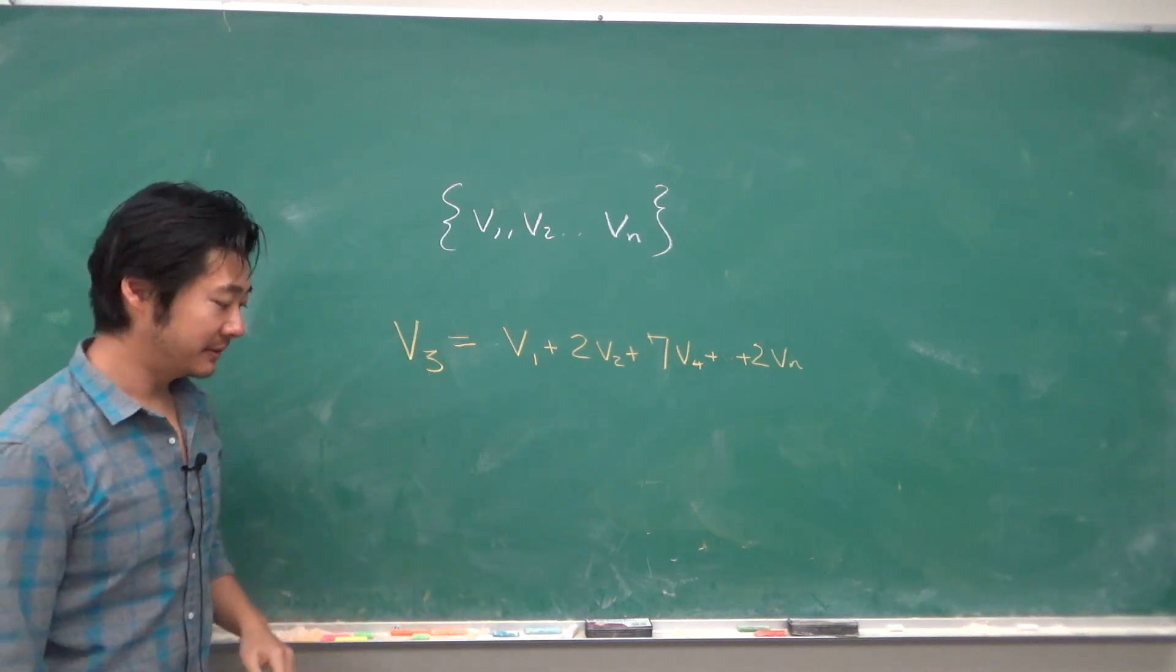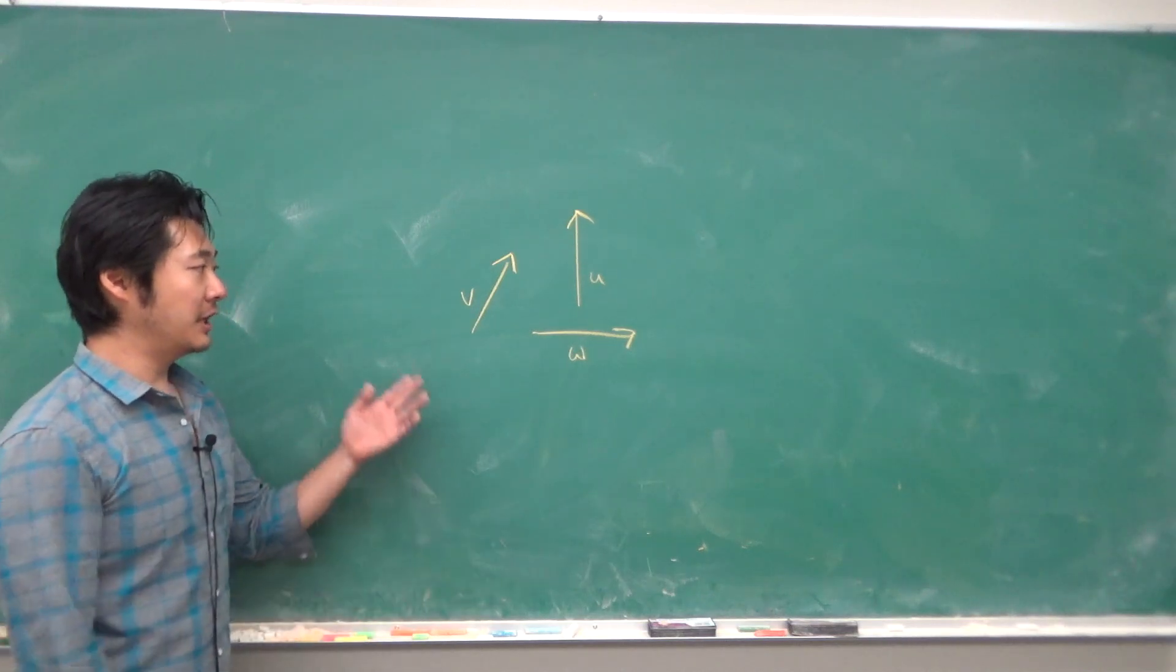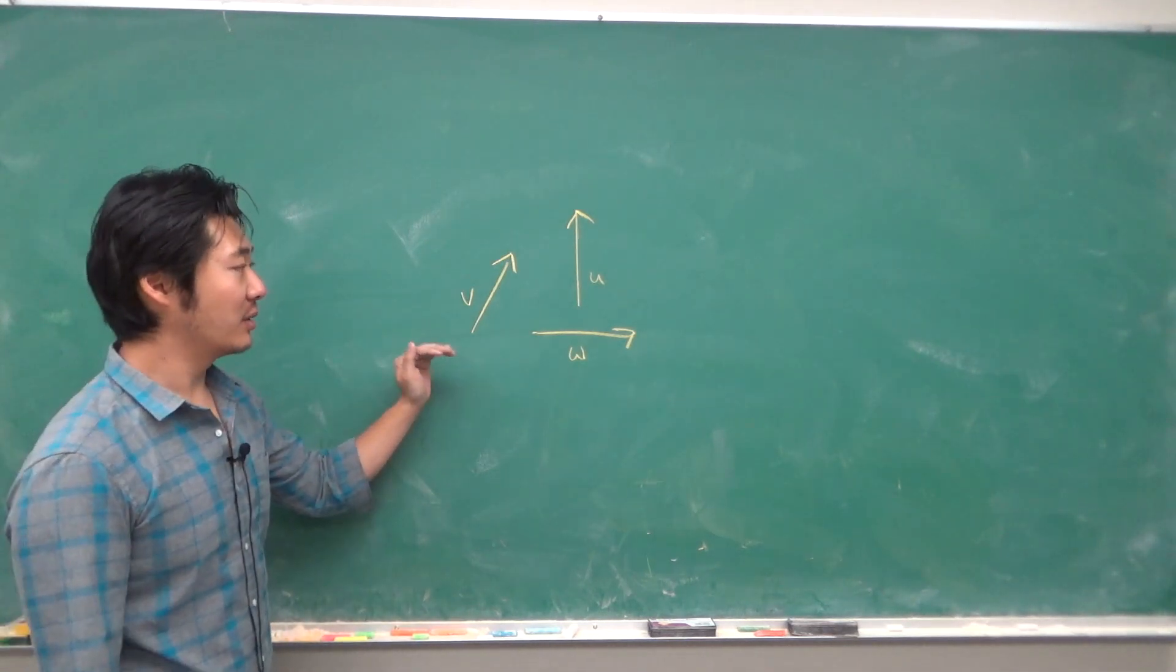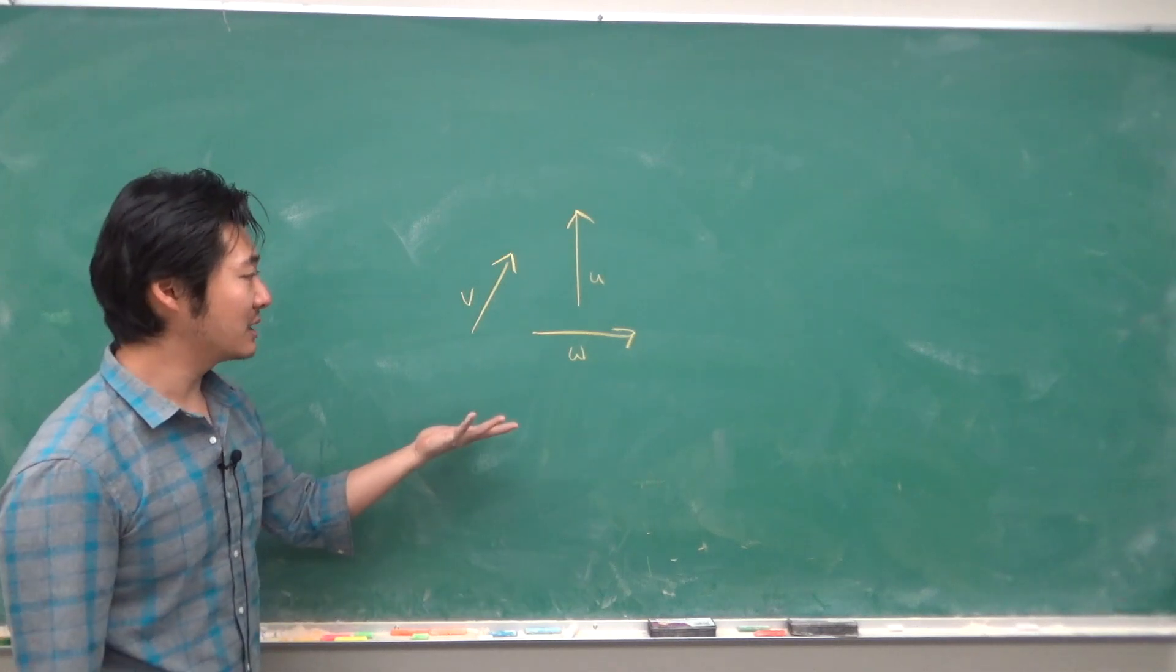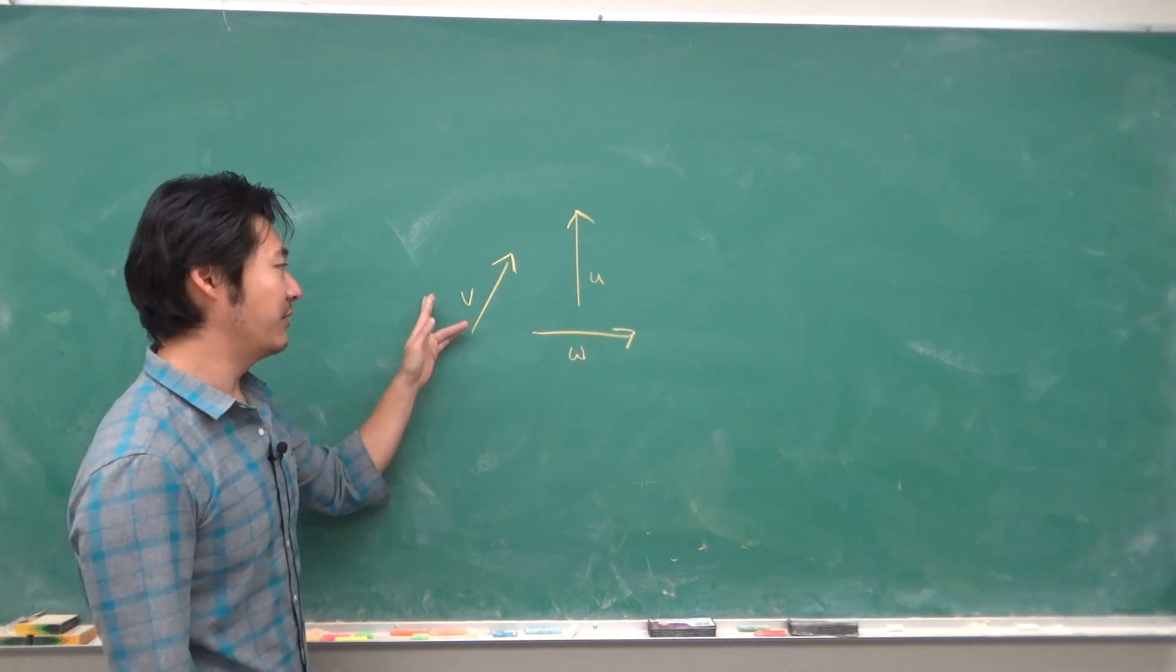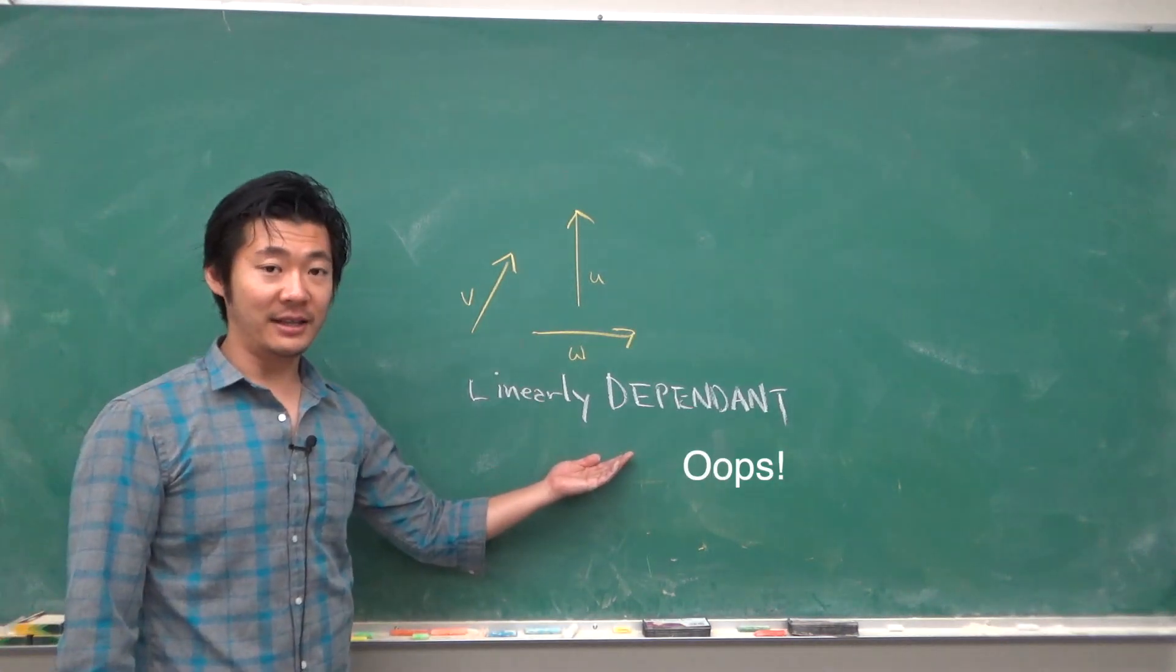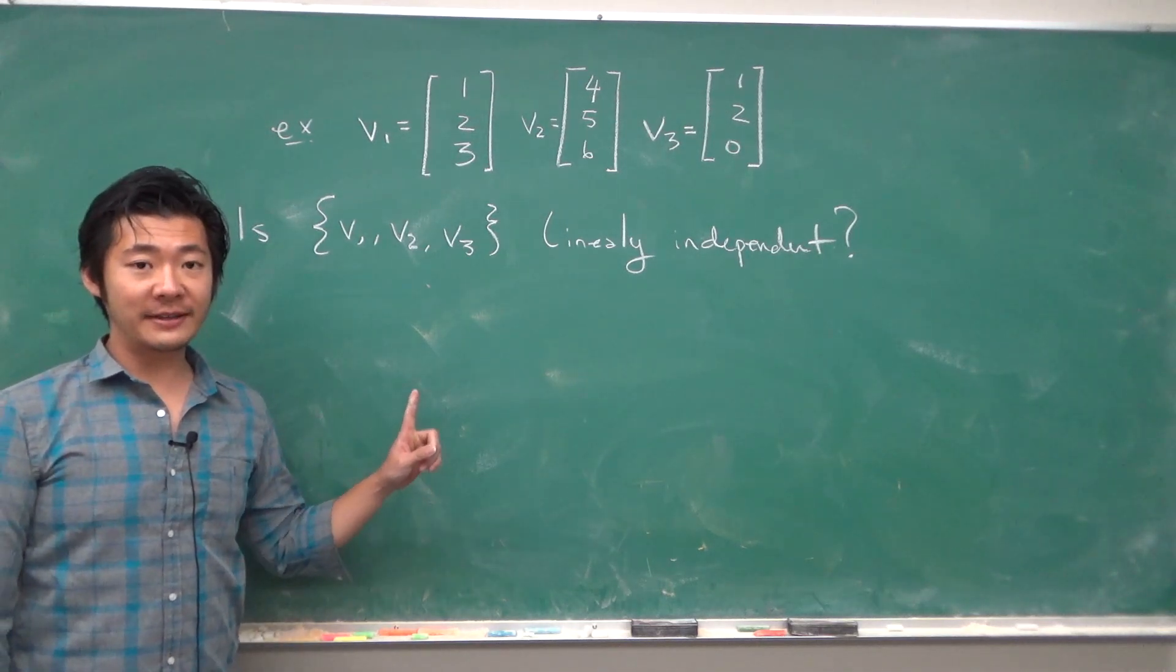Back to three 2D vectors. Certainly this set cannot be linearly independent, because two non-parallel vectors on a plane will span the entire plane, so it would be possible to write, let's say W, as a linear combination of V and U. Therefore they would be linearly dependent. To check if a given set of vectors is linearly independent, we just follow the definition.